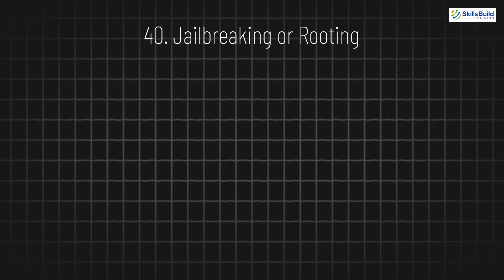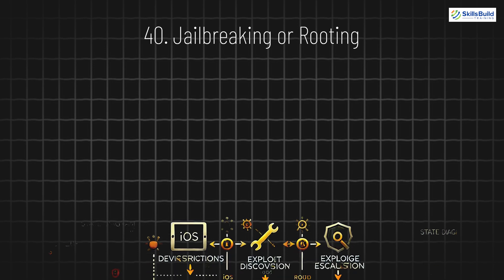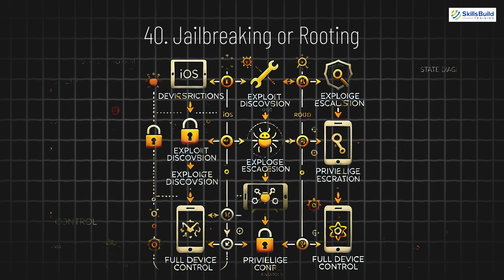40. Jailbreaking or Rooting. Jailbreaking (iOS) and rooting (Android) allow users to remove manufacturer restrictions from their devices, giving them more control. However, this can make the device vulnerable to malicious software and other attacks.